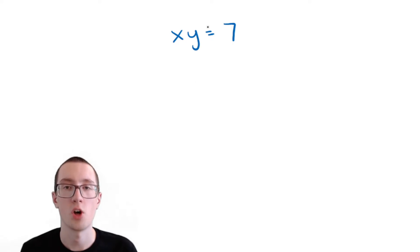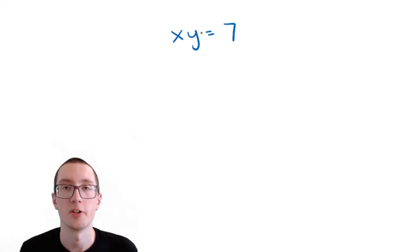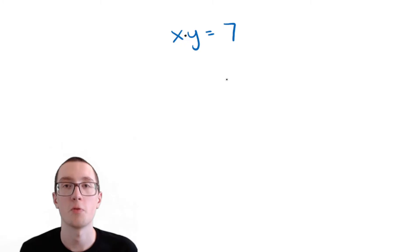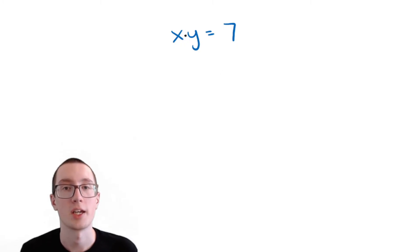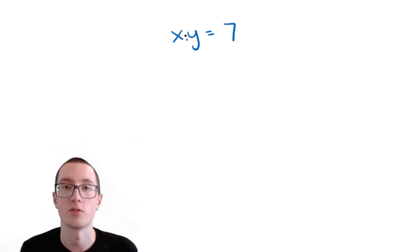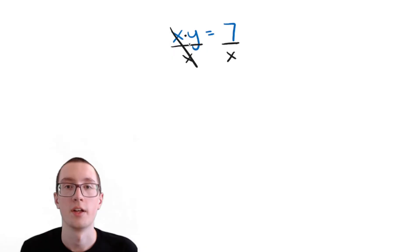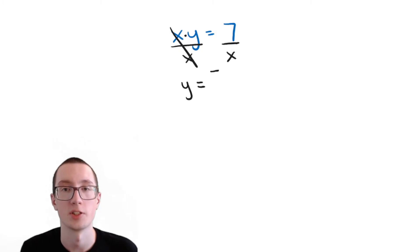Here's another example. We have xy equals 7. Whenever we have two letters, or a number and a letter next to each other with no sign, that means it's multiplication. So we'll get y by itself like before and see if it turns into y equals mx plus b. Since this is multiplication, we need to do the opposite, which is division. We need to get rid of this x to leave y by itself, so we will divide both sides by x. These cancel out — x divided by x is just 1 — and we're left with y. On the other side, we have 7 divided by x.